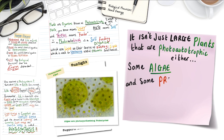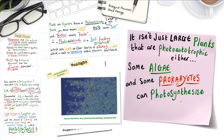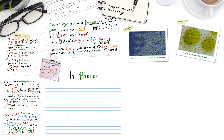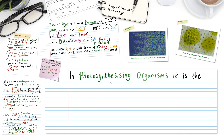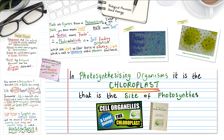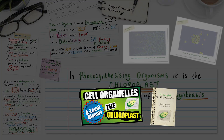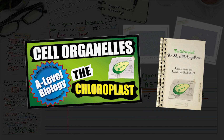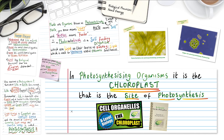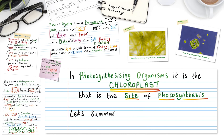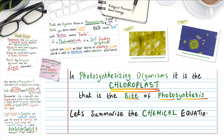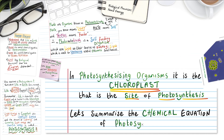Some algae and some prokaryotes can photosynthesize too. In photosynthesizing organisms, it is the chloroplast that is the site of photosynthesis. And in the following lessons, you'll learn about the structure and function of the chloroplast, and the biochemical process of photosynthesis. But first, let's summarize the chemical equation for photosynthesis.